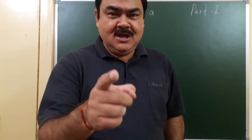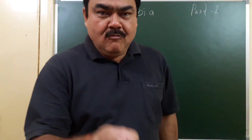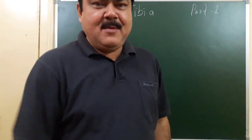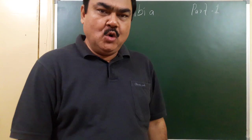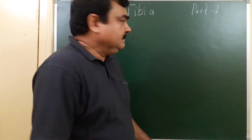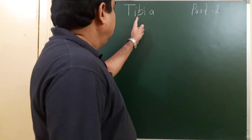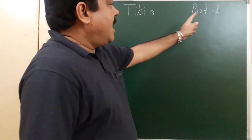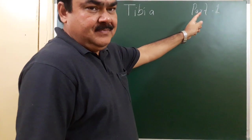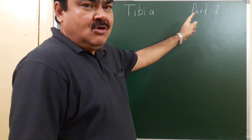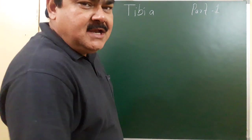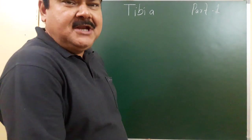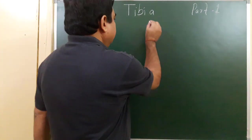Now we'll discuss the anatomy of the tibia bone. This is tibia part one, in which we'll discuss the side determination of the tibia.